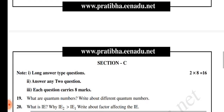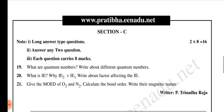In Section C, we have the first question on quantum numbers. Then IE1 and IE2 and about factors — that means explain about factors. Next is the periodic table, and then modes of O2 and N2.